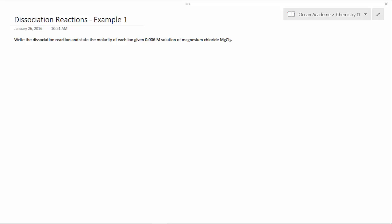Hello and welcome to Ocean Academe Chemistry 11. Dissociation reactions, Example 1. Write the dissociation reaction and state the molarity of each ion given 0.006M solution of magnesium chloride, MgCl2.